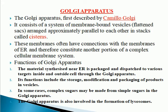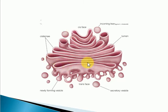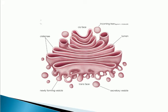Now let's talk about the Golgi apparatus, another very important cell organelle. Looking at its structure, you can see the different bag-like structures called cisternae. One phase is called the cis phase and the other is the trans phase. The protein molecules enter from the cis phase and come out from the trans phase, and the packaging of proteins takes place inside the Golgi apparatus. That is why it is also called the post office of the cell.